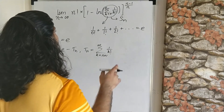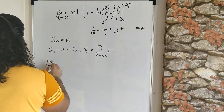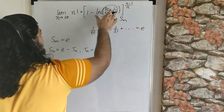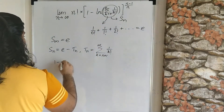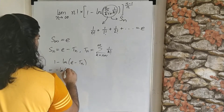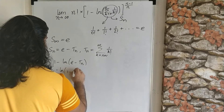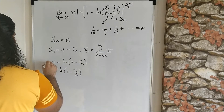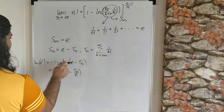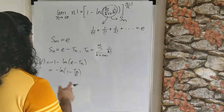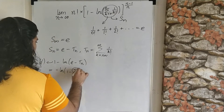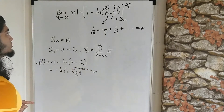We'll drop the n factorial and exponent for now and just look at what happens to 1 minus ln(e minus T_n). We can write that as minus ln of (1 minus T_n over e), by writing 1 as ln(e^1) and combining using the sum of logarithms. This is pretty much the simplest form we can have. Notice that T_n goes to 0 as n goes to infinity, so we have a 1 minus 0 situation inside the log.